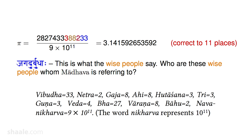So we get a large number in the numerator. The denominator is 'navanikharva', which is 9 times 10 to the power of 11. 'Vrithivistara' means diameter, and this entire ratio is stated to be the paridhi — the circumference.